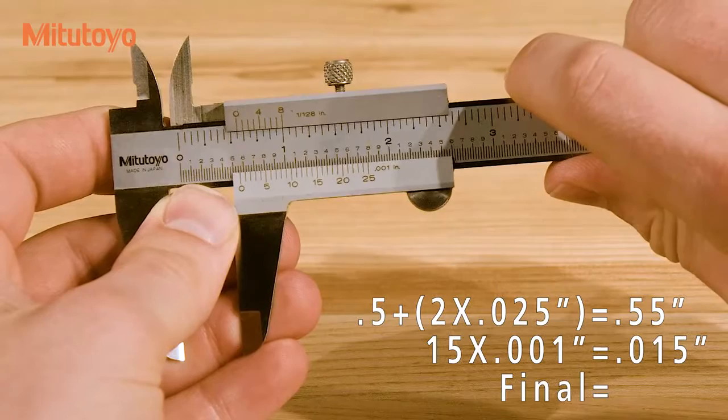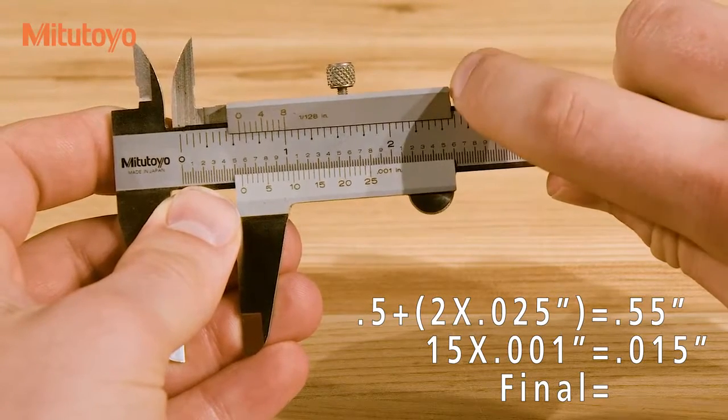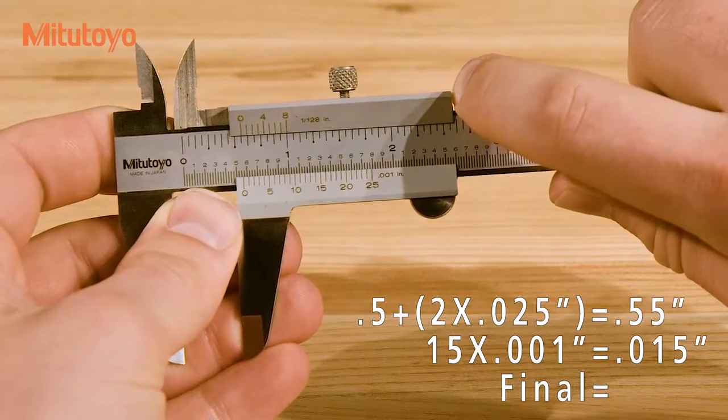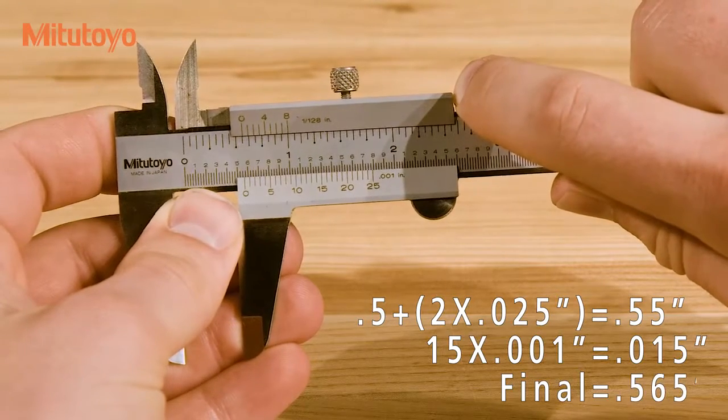The final reading is the sum of these two readings, so that's .550 inches and .015 inches, for a final reading of .565 inches.